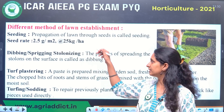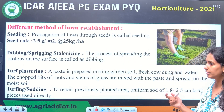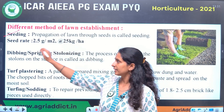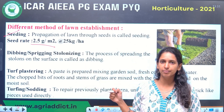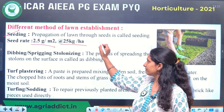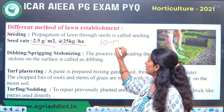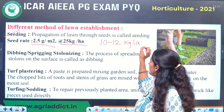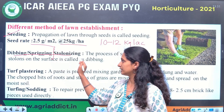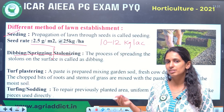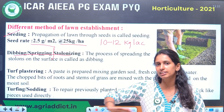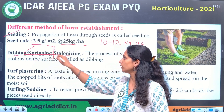Here are the different methods of lawn establishment. First, Seeding — a basic method using seeds. The seed rate is generally 2.5 grams per meter square or 25 kg per hectare. For acres, it will be 10 to 12 kg per acre. Second method is Dibbling or Springing, also called Stolenizing. This method is mainly for grasses with stolons — stolons are taken and evenly spread on the land.